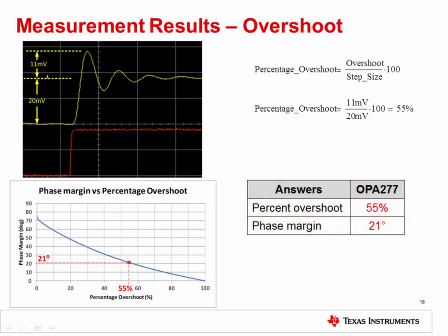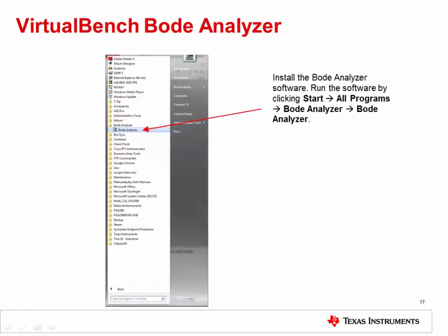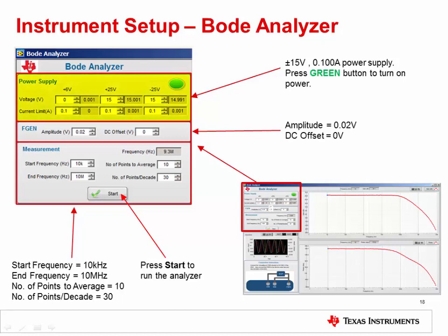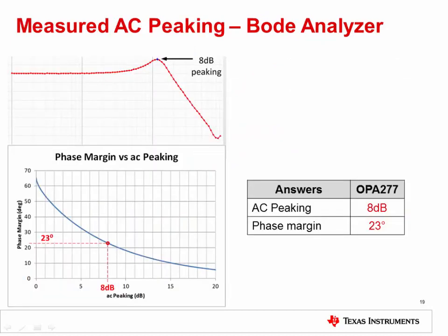Before continuing, please close the VirtualBench software. The next step requires additional Bode Analyzer software. Install the software, then run it by clicking Start, All Programs, Bode Analyzer, Bode Analyzer. In the configuration panel, set the power supply to plus and minus 15 volts, 0.1 amps. Press the green button to turn on the power. Set the FGEN amplitude to 0.02 volts and DC offset to 0 volts. Set the start frequency to 10 kilohertz and the end frequency to 10 megahertz. Set the number of points to average to 10 and the number of points per decade to 30. Press Start to run the Bode Analyzer. You should see a result similar to this. Enable the cursor, then drag the cursor to the maximum value to measure the AC peaking. In this measurement, AC peaking of 8 dB resulted in a phase margin of 23 degrees. Your results may vary slightly.